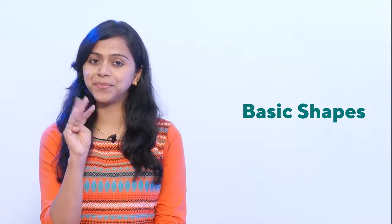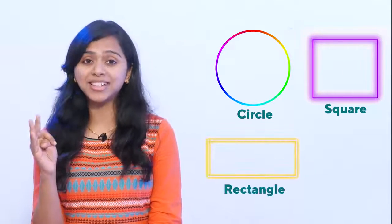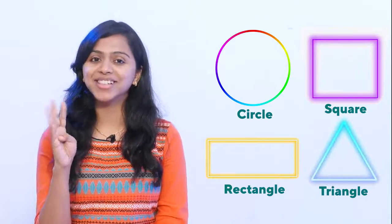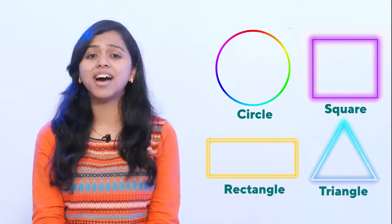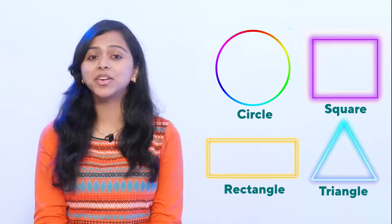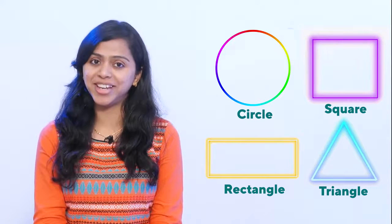Every day in our life, boys and girls, we come across so many different things, and all these things are made up of different shapes. Can you think of some basic shapes that you come across every day? Can you tell me at least four of them? Circle, square, rectangle, and triangle. That's right — these are called the basic shapes, and we come across these shapes almost every day.